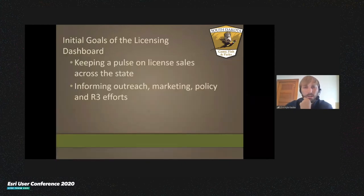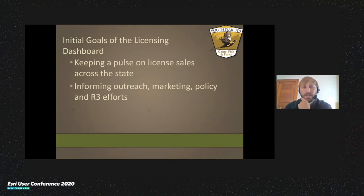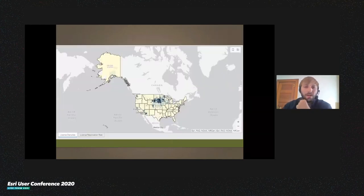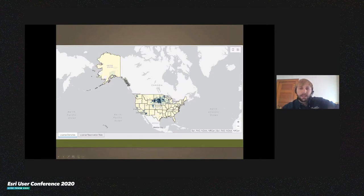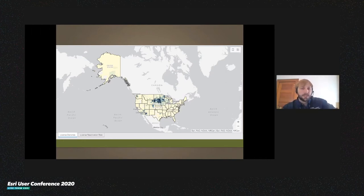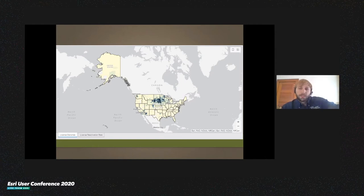As Tanaya mentioned, informing our outreach marketing policy with our R3 efforts is the main focus of this dashboard. Previously I had worked with our licensing data on different projects, but not to the extent other staff may have. I knew there were challenges with that data — inconsistencies, and the biggest problem was the sheer size of that data. We started with initial input from staff on what they were actually looking for. Initially I started by just staring at a table of hundreds of thousands of records.